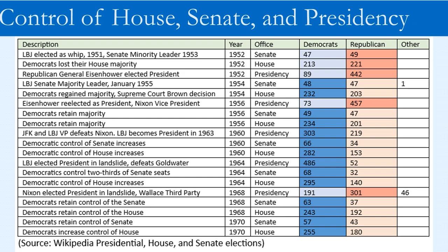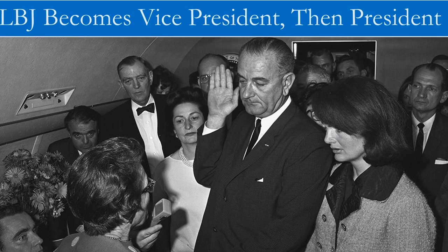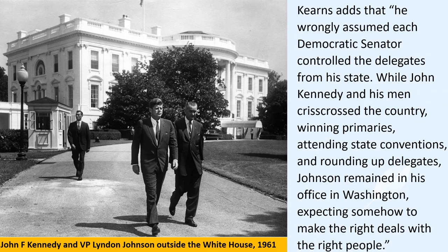Also in 1968, Governor George Wallace bolted from the Democratic Party and ran for president as a third-party candidate. Why was Lyndon Johnson unsuccessful in seeking the presidency in 1960? He told Doris Kearns that he did not believe a southerner could win the presidency that year. Kearns adds that he wrongly assumed each Democratic senator controlled the delegates from his state. While Kennedy and his men crisscrossed the country winning primaries and rounding up delegates, Johnson remained in his Washington office, expecting to make the right deals with the right people.